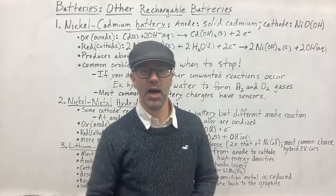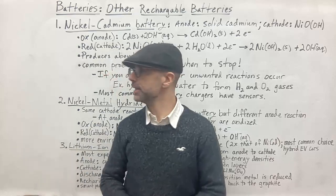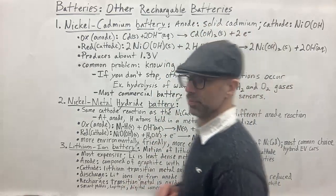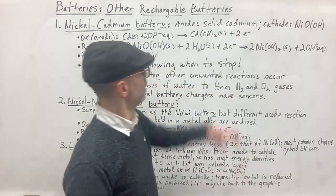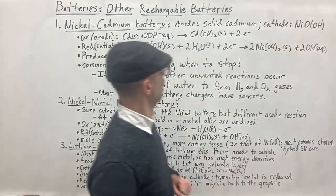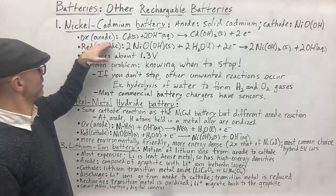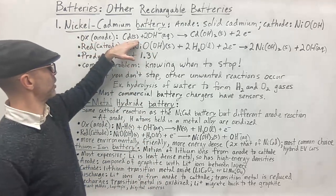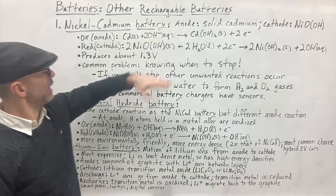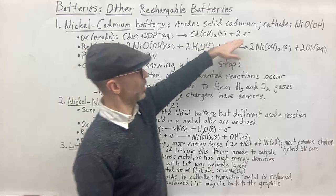Now this is the battery that I think a lot of people are familiar with. In this battery the anode is a solid cadmium and the cathode is a nickel oxide hydroxide. So here's what's going on at the anode. Oxidation at the anode.